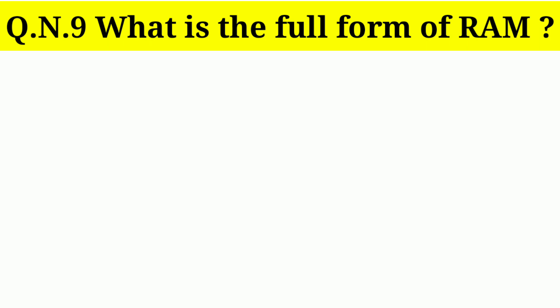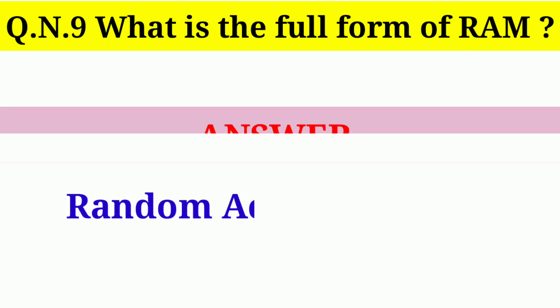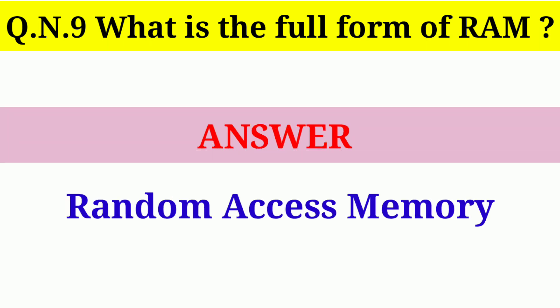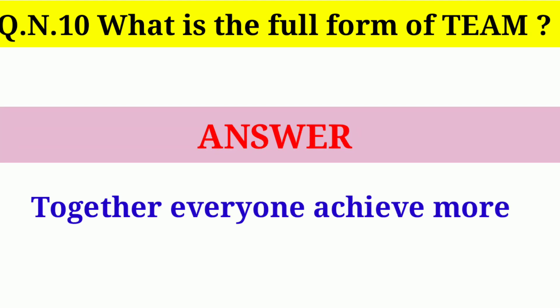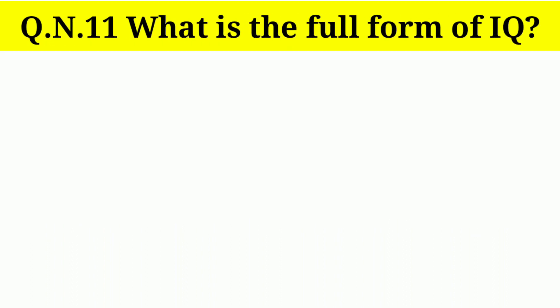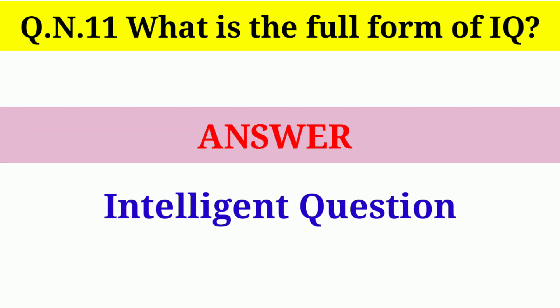Question number 8: What is the full form of ETC? Answer: End of Thinking Capacity. Question number 9: What is the full form of RAM? Answer: Random Access Memory. Question number 10: What is the full form of TEAM? Answer: Together Everyone Achieves More.